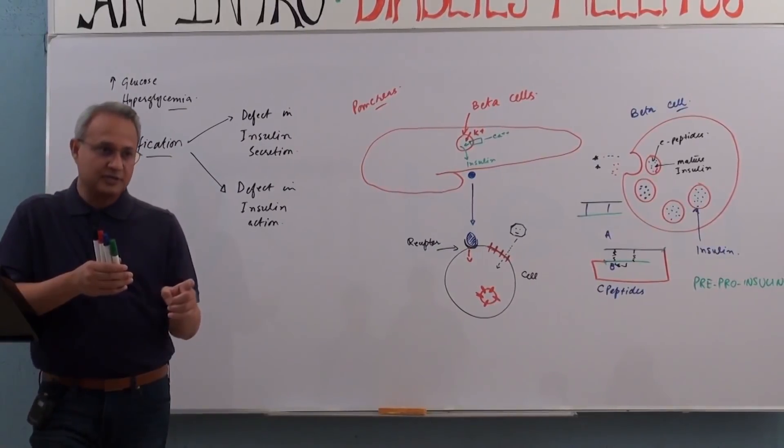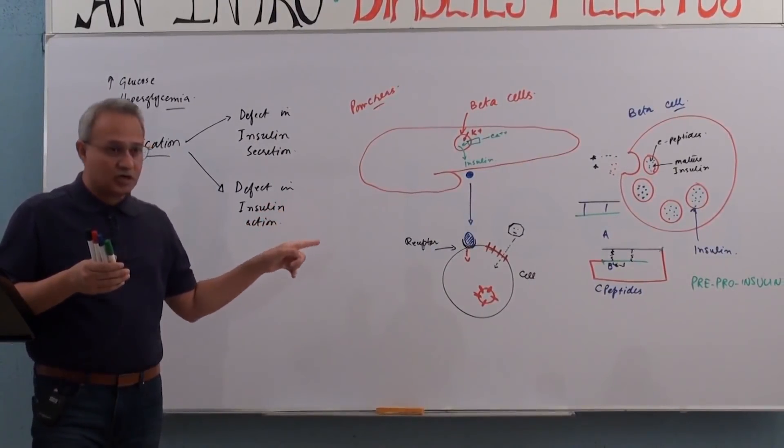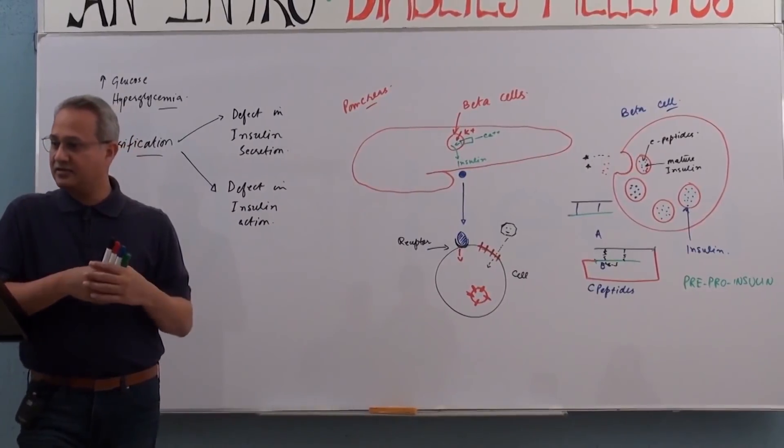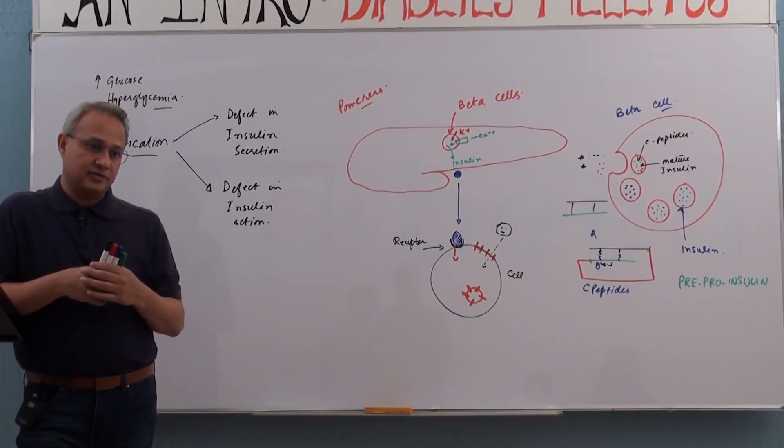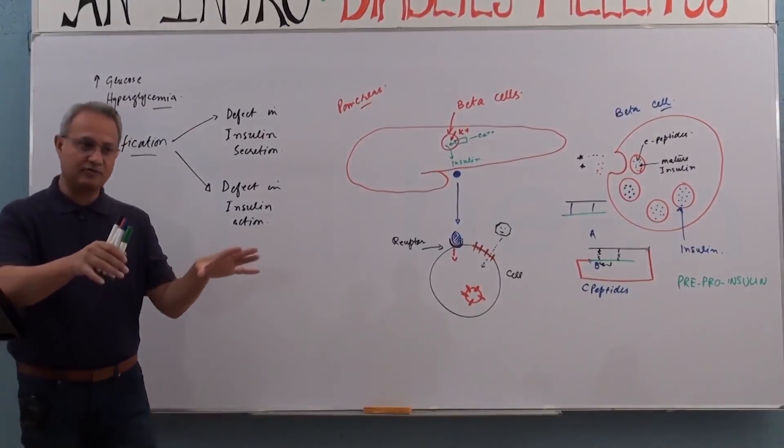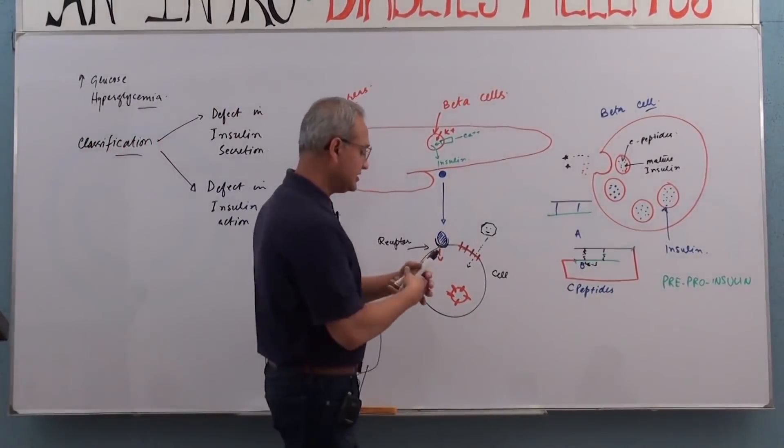The problem is this glucose - if it cannot go in the cells, it is going to stay out. Imagine lots of fish, glucose being fish. All those fish are sitting out where?